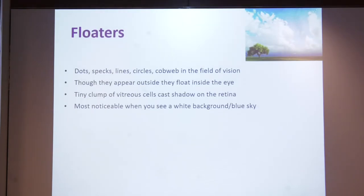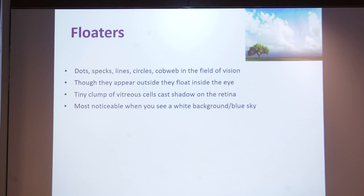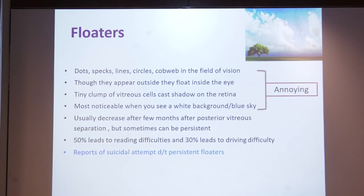Floaters are dots, specks, lines, circles, cobwebs which you see in the visual field. They appear to be outside but actually float inside the eye — tiny clumps of vitreous cells which cast shadows on the retina, most noticeable when viewing a white background or blue sky. Usually the annoyance decreases after a few months once vitreous separation occurs, but sometimes they can be persistent.